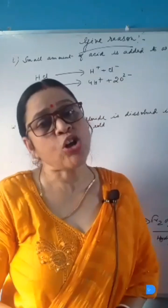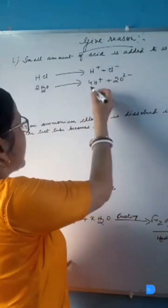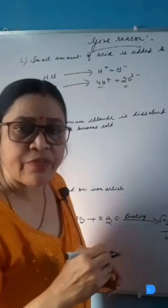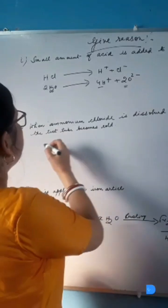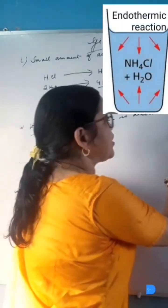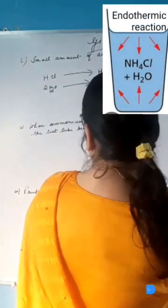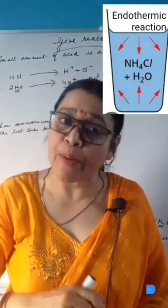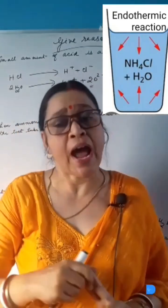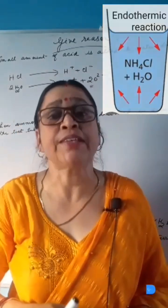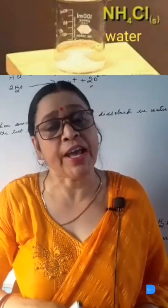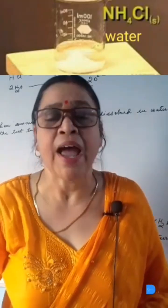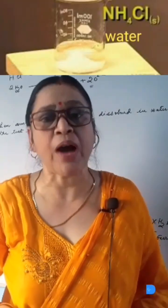Then, the water also decomposes to produce hydrogen ions and oxygen ions. When ammonium chloride is dissolved in water in a test tube, the test tube becomes cold. The reaction between ammonium chloride and water is an endothermic reaction, so it takes heat from the surroundings and the test tube becomes cold.